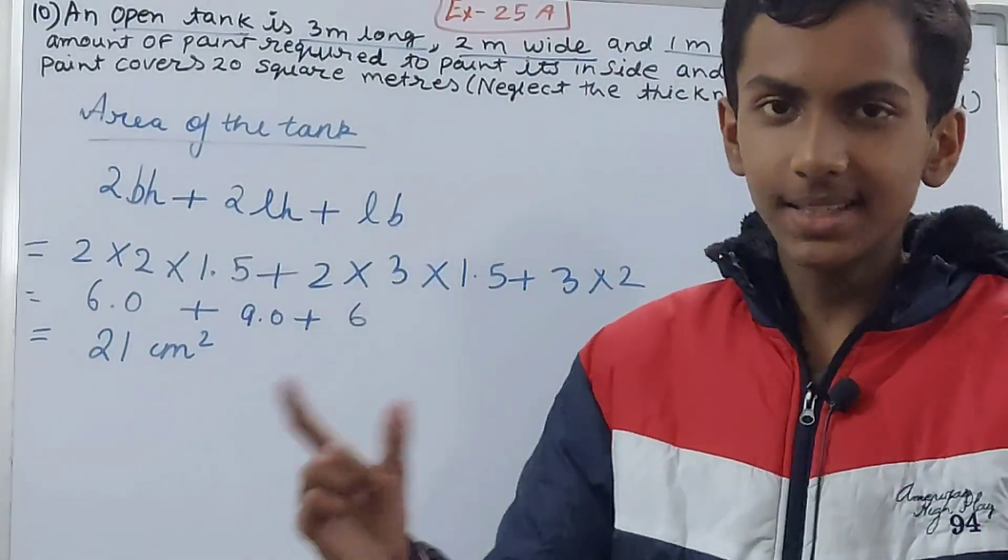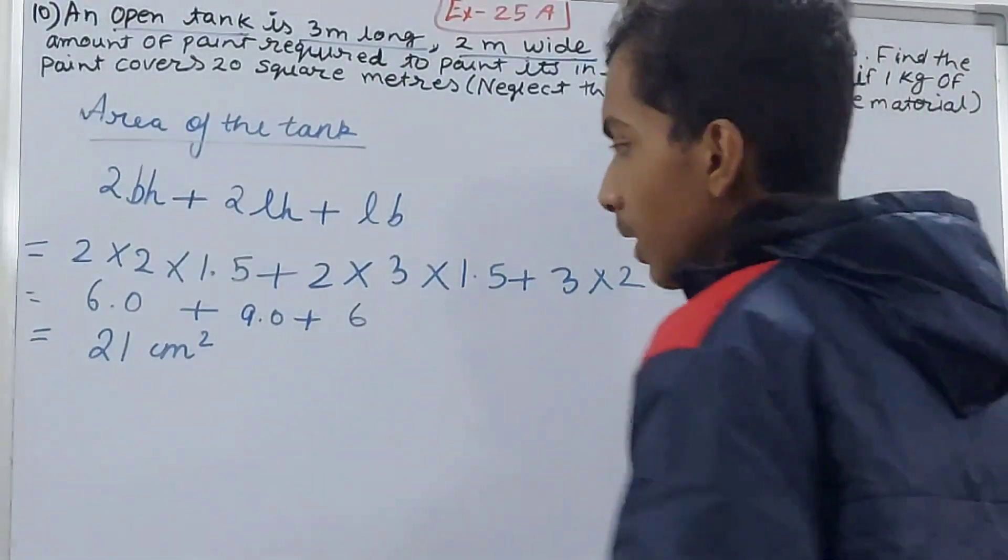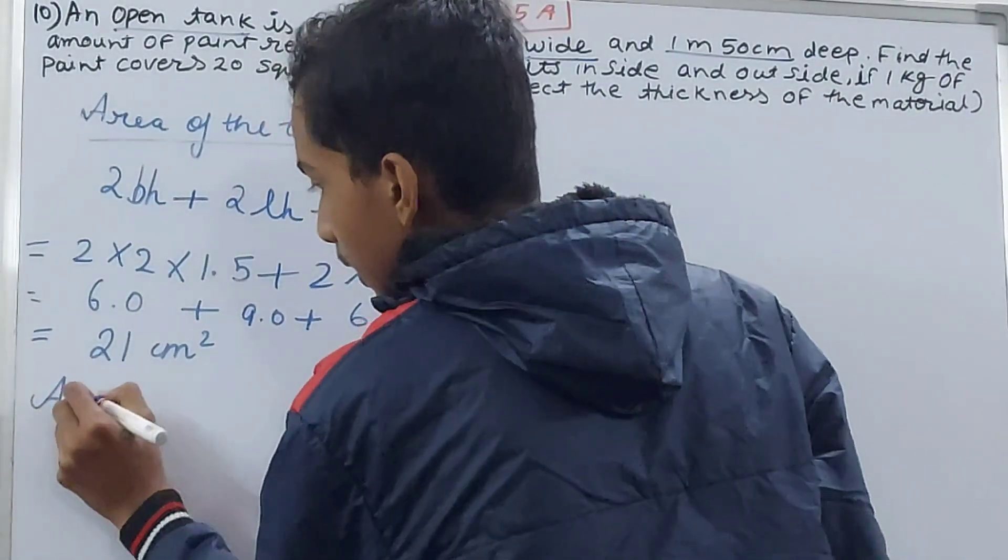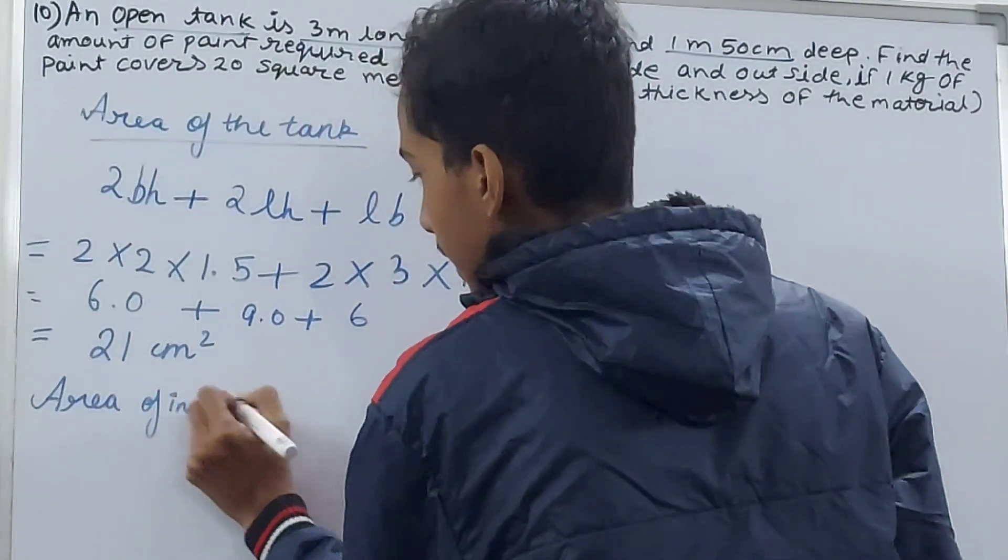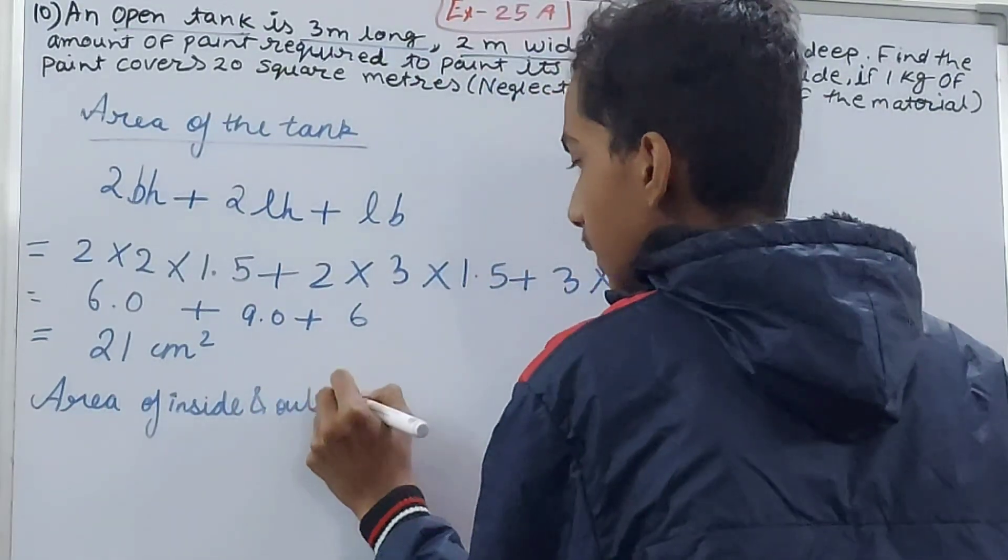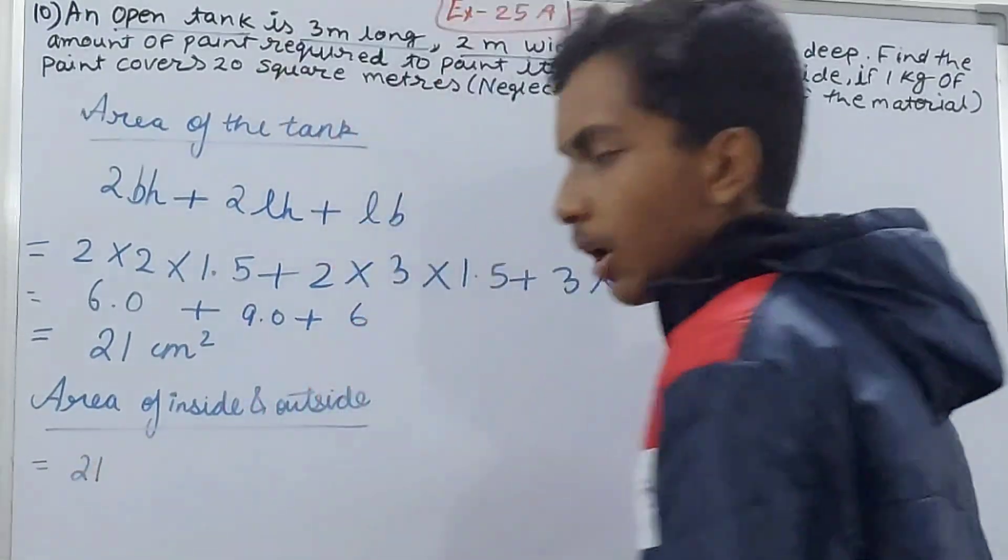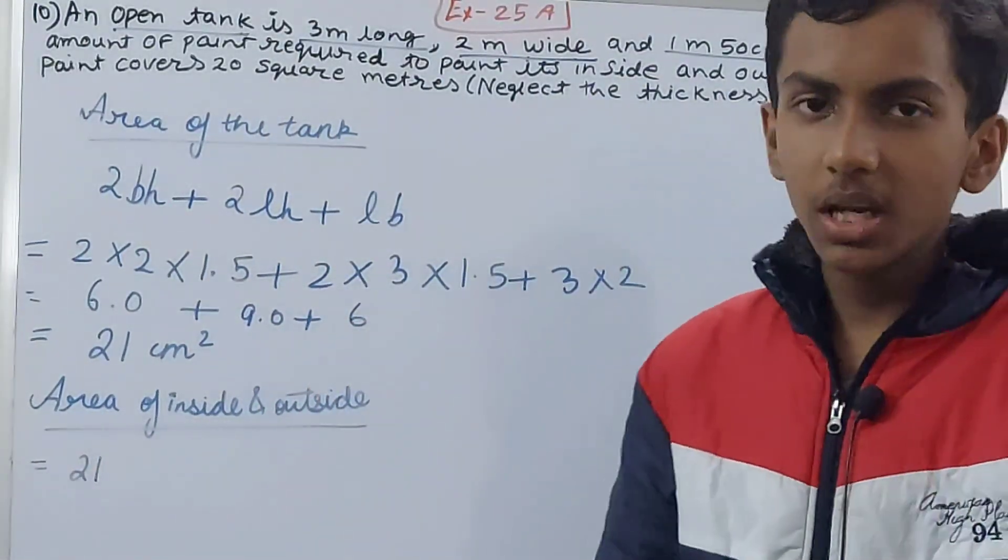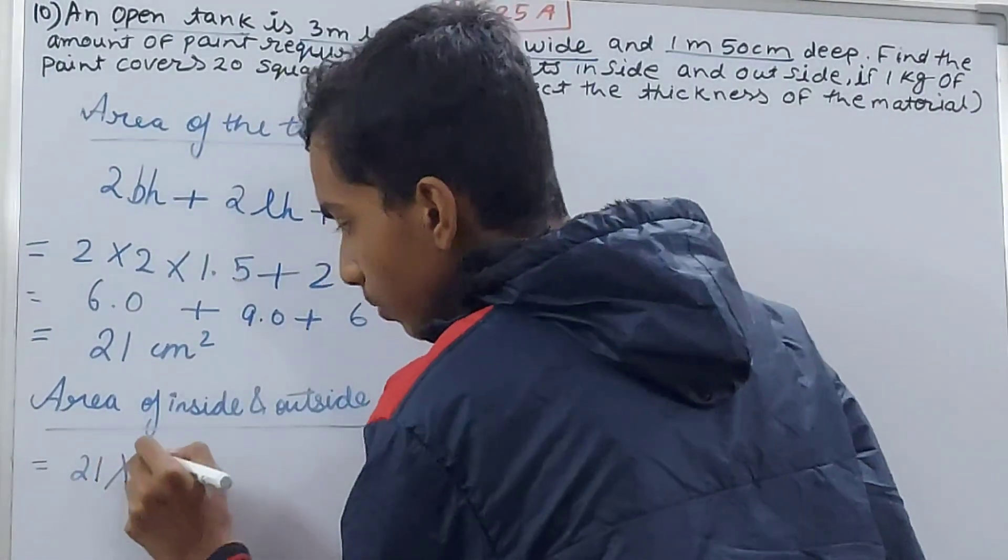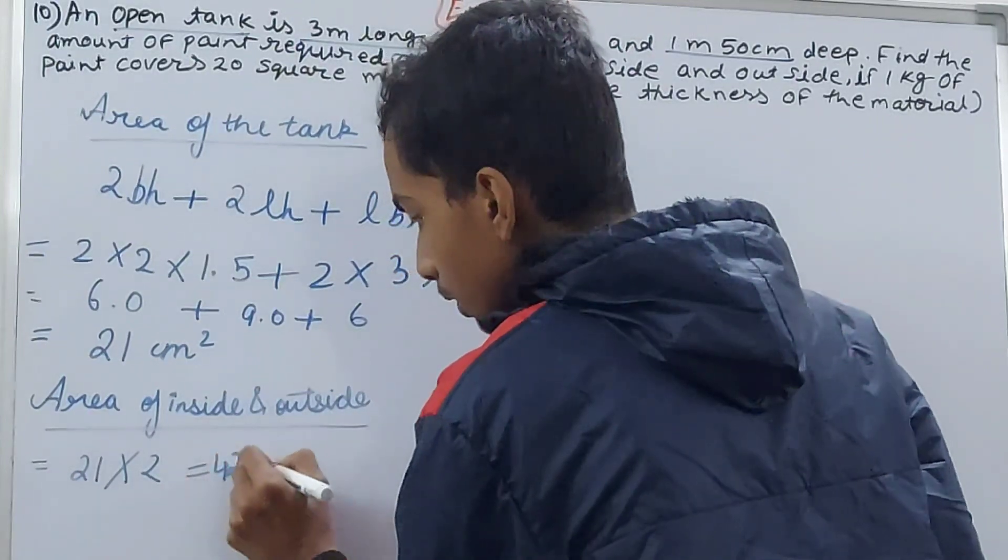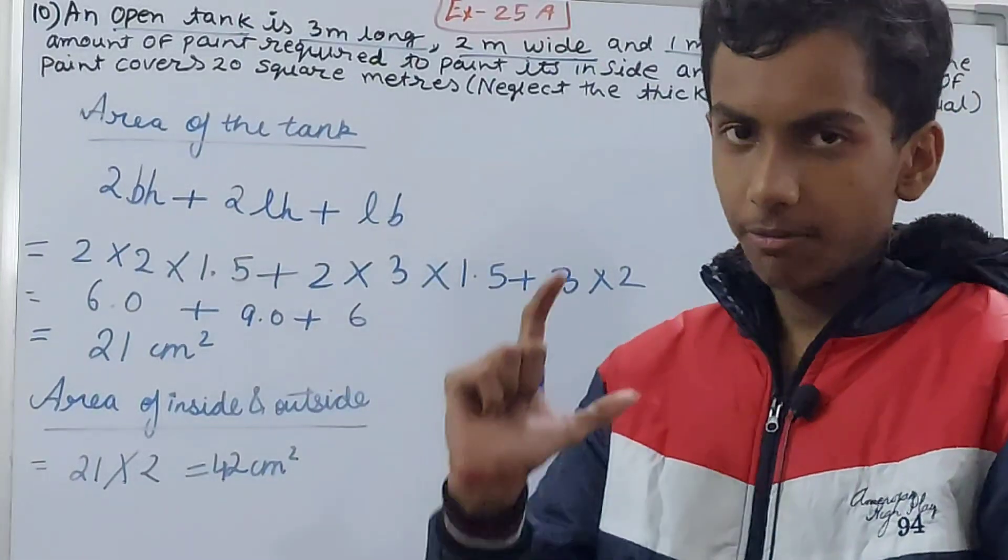We also have to paint the outsides of this tank. For that, what I will do: area of inside and outside combined. So what will that be? 21 is the area of the tank inside. Same area will be there outside also, area will not change. So what I will do: 21 into 2, that's 42 square centimeters. That's the area of the tank from the inside and the outside combined.